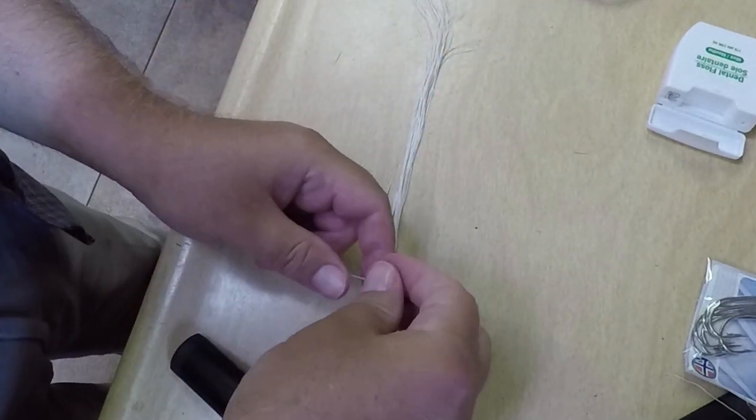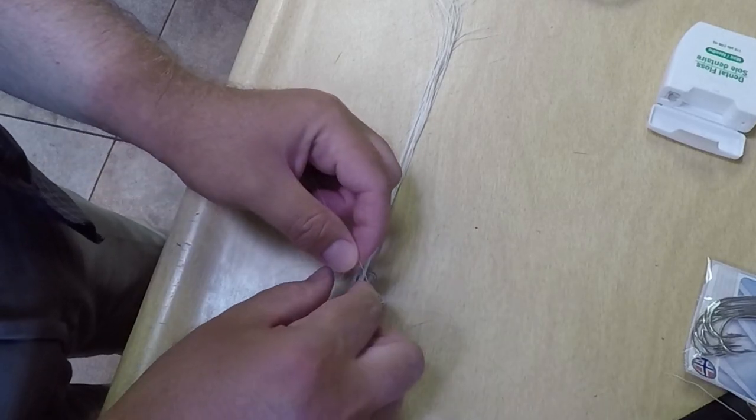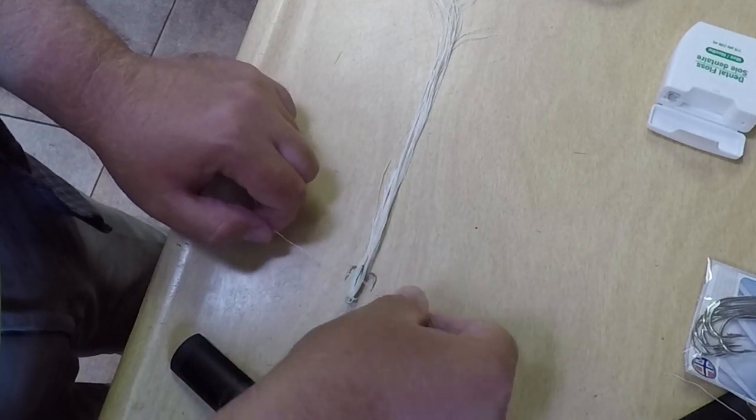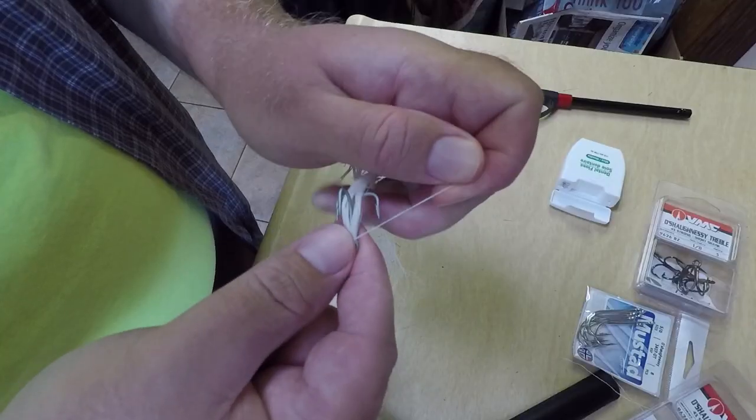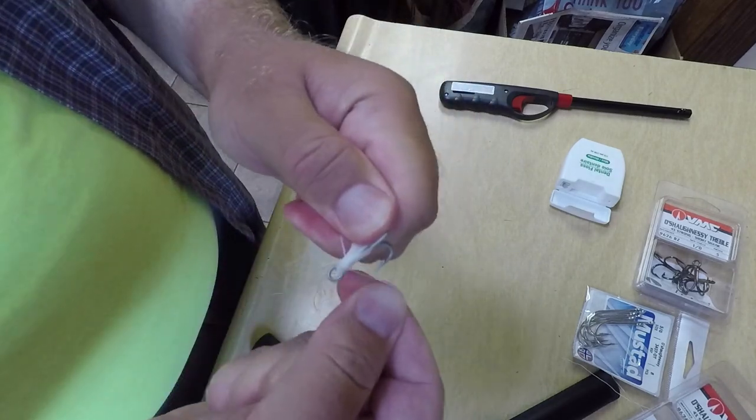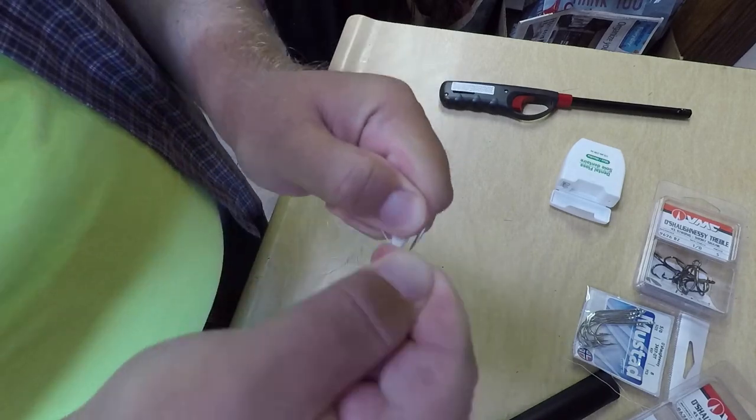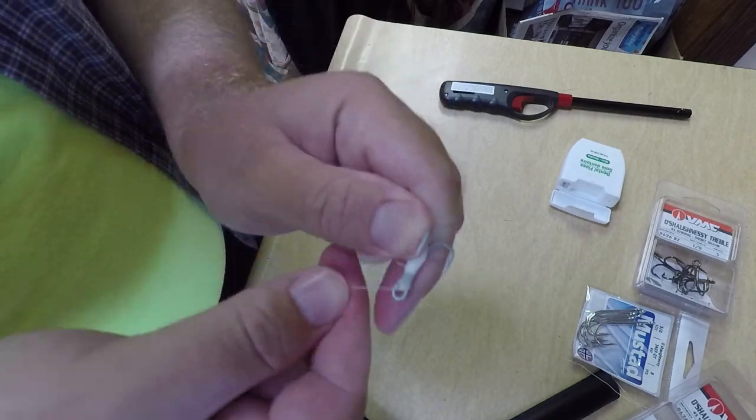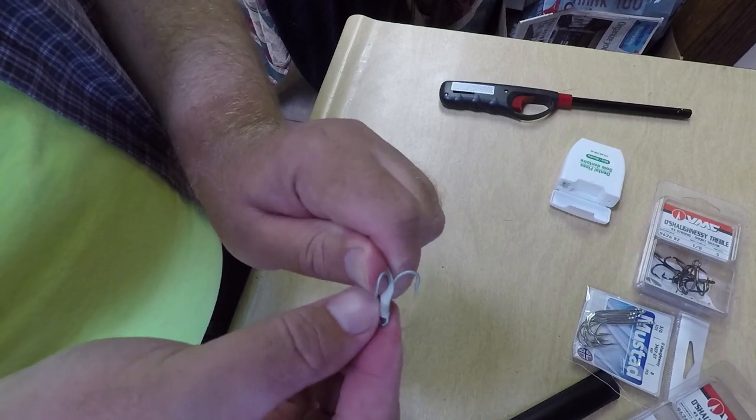One more. Flip it around here a little bit. Because I made it go through, it doesn't have to be as thick. I don't want it too thick because it's going to get in the way of hooking the fish.